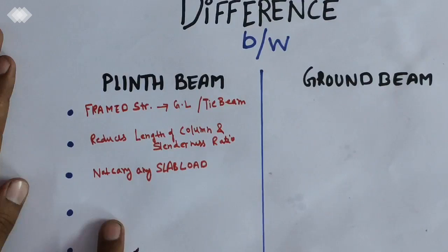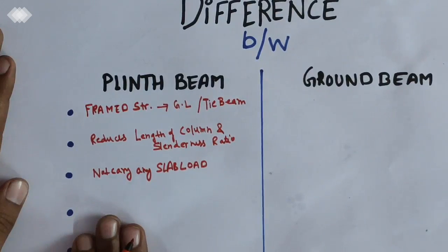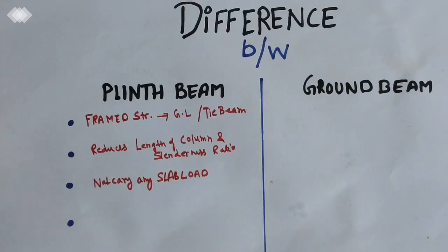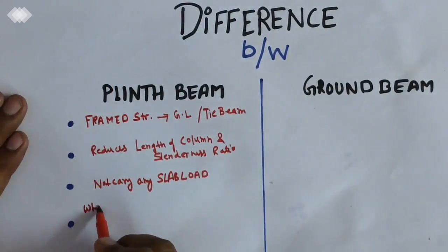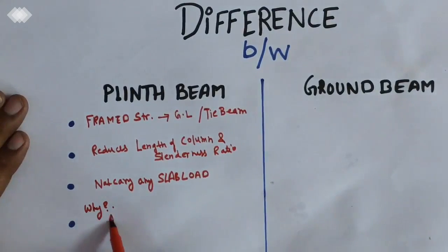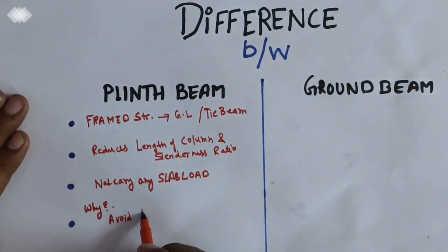The plinth beam is designed to carry its own self weight and masonry load above it. The plinth beam needs to be strong but need not to be made up of reinforced cement concrete all the time. This is an important point.